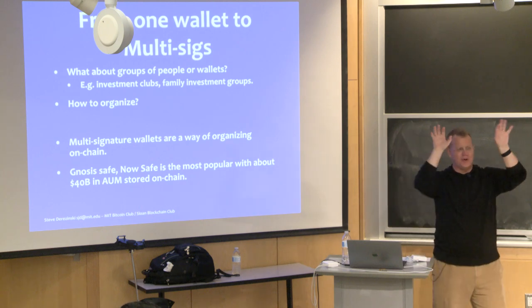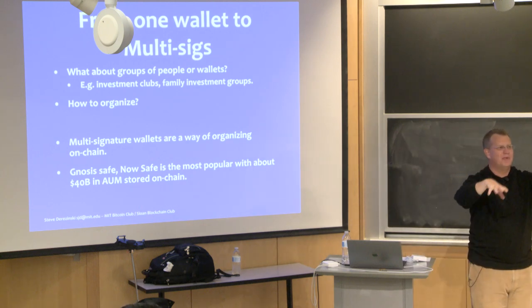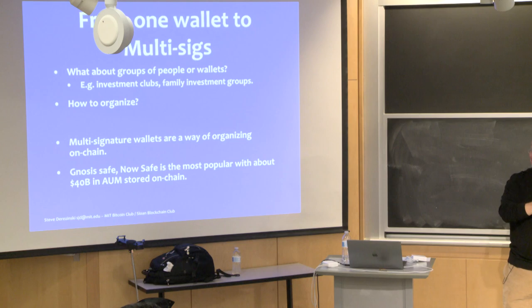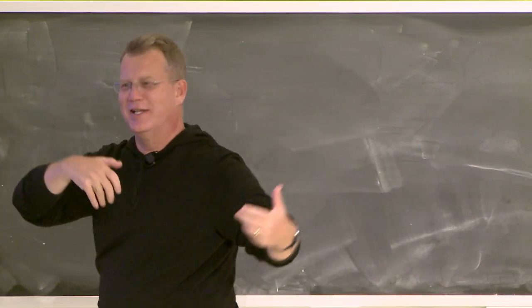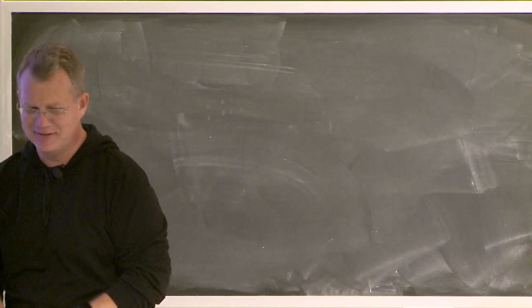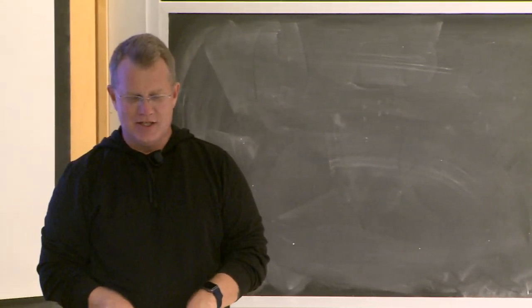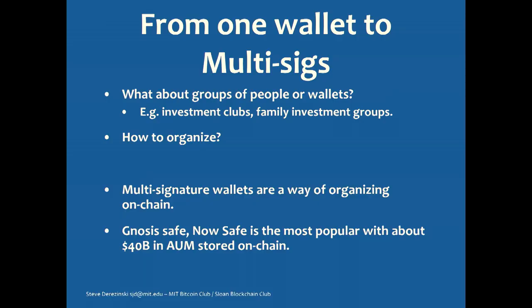With that as a backdrop — being individuals and wallet owners — now we want to create an organization full of individuals working together. How can we coordinate this on the blockchain? One way is with something called a multi-sig, short for multi-signature. And Gnosis Safe — they've changed the name, it's now called just Safe — is a digital bank, a digital asset holder, charging ahead with the digital ownership economy. Right now they have about 40 billion dollars in assets under management across all their safes.